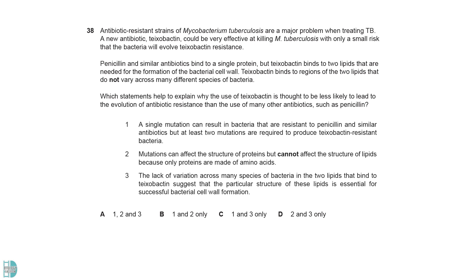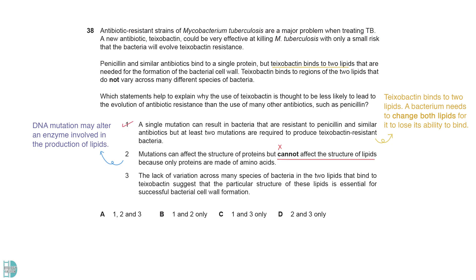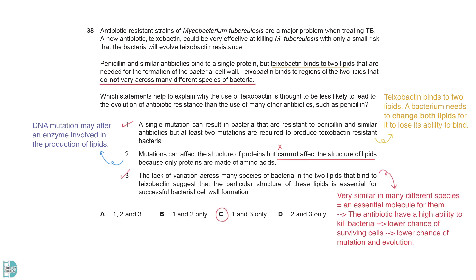Taisobactin binds to two lipids. A bacterium needs to change both lipids for it to lose its ability to bind. Two is wrong because DNA mutation may alter an enzyme involved in the production of lipids. So even though lipids are not made up of amino acids, they can still be altered when there is a change in the DNA. Three is correct — a molecule that is very similar in many different species indicates that it is an essential molecule. This enables the antibiotic to have a high ability to kill bacteria, resulting in a lower chance of surviving cells that can mutate and evolve.